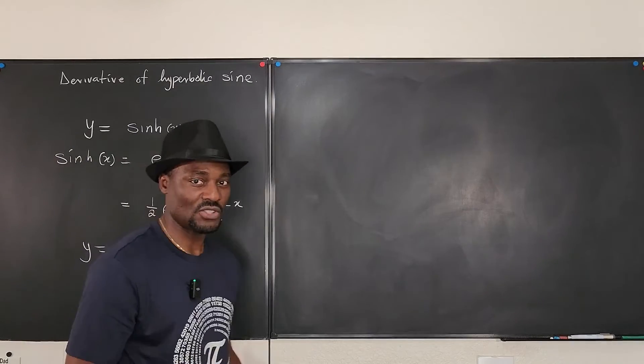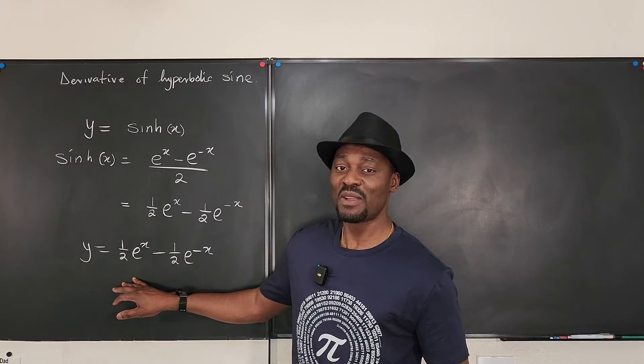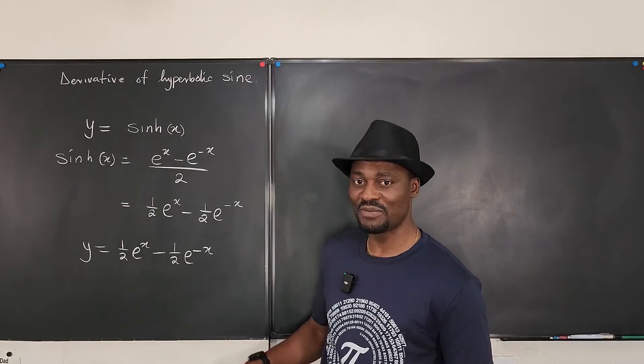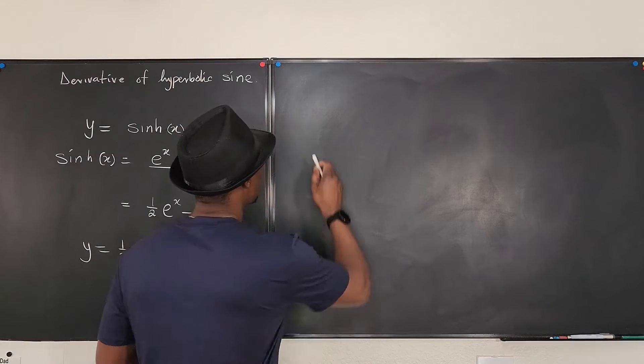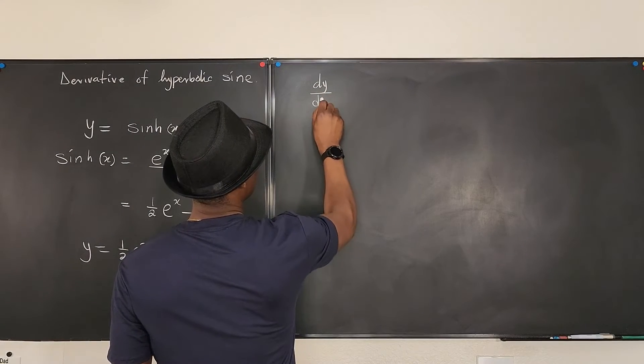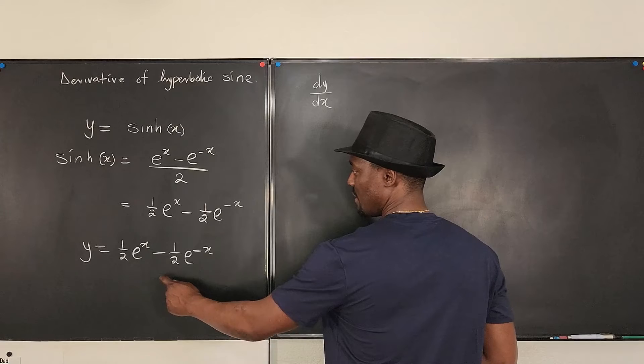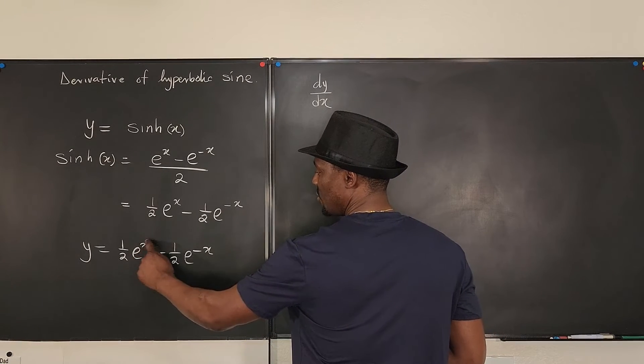because it's easy to differentiate anything expressed as an exponential function in terms of e. So what is dy/dx? The derivative of this will be equal to—if you differentiate e to the x, you